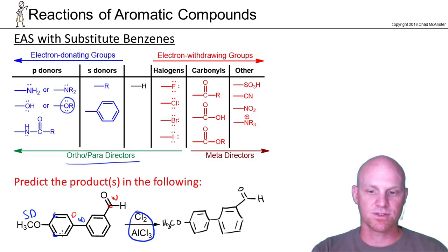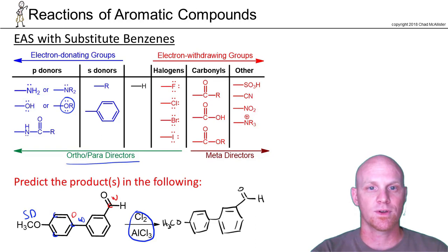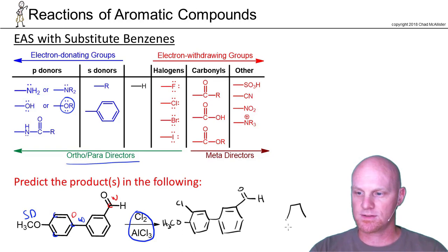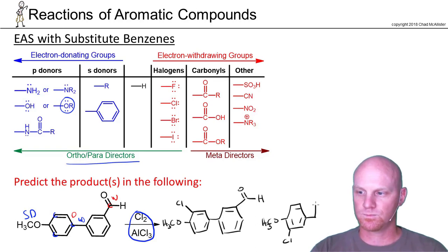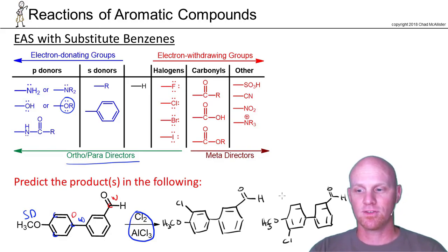There are the ortho positions and the para position for OCH3. The para is already taken — there's no hydrogen there, so we can't react there. So we're going to have to pick an ortho position, which means we could get a couple of different products. This molecule is not perfectly symmetrical, so we could add a chlorine on this side or on the other side. Technically those are two separate products, and the ortho positions in this case are not equivalent — you've got to consider both.